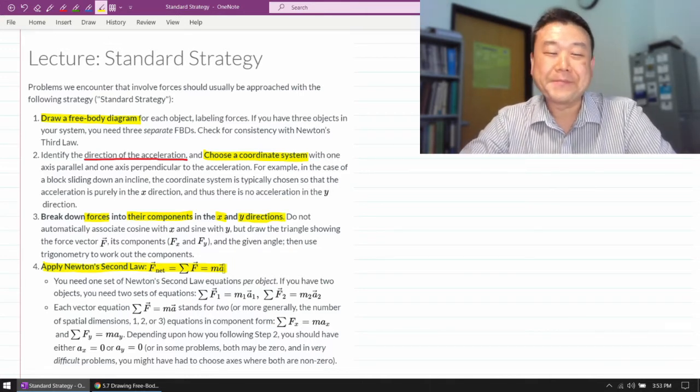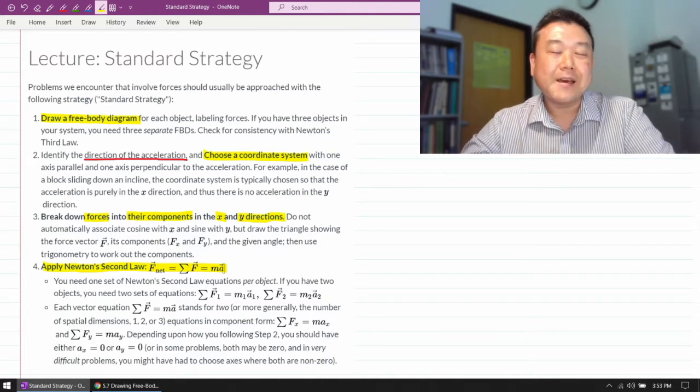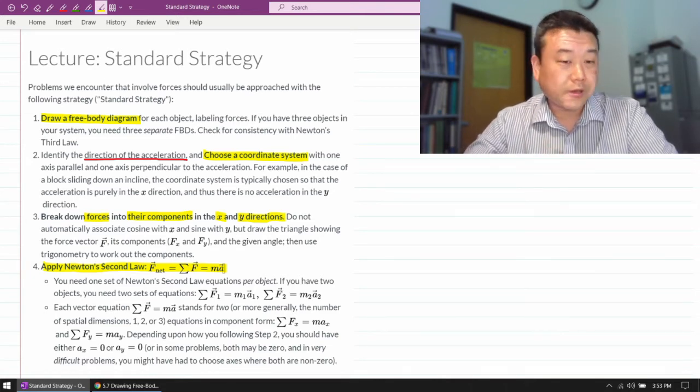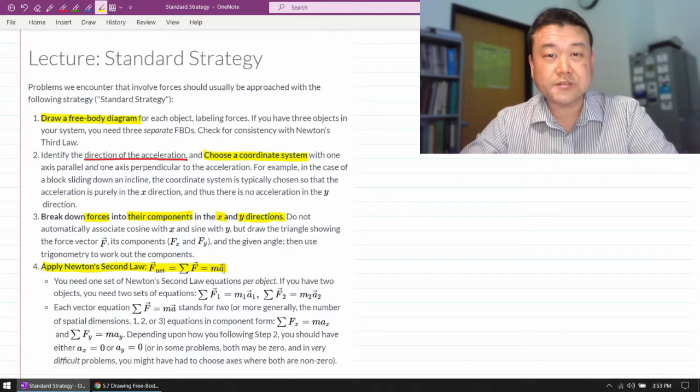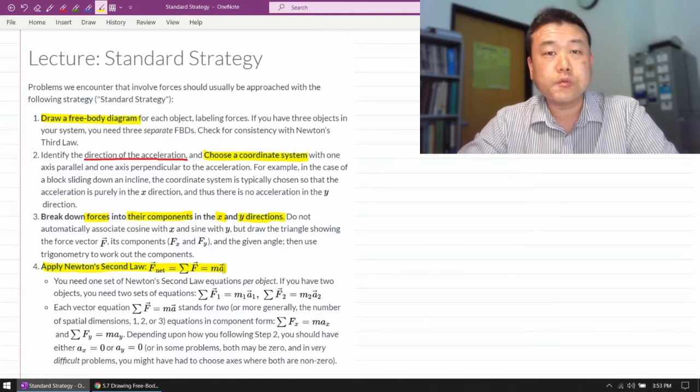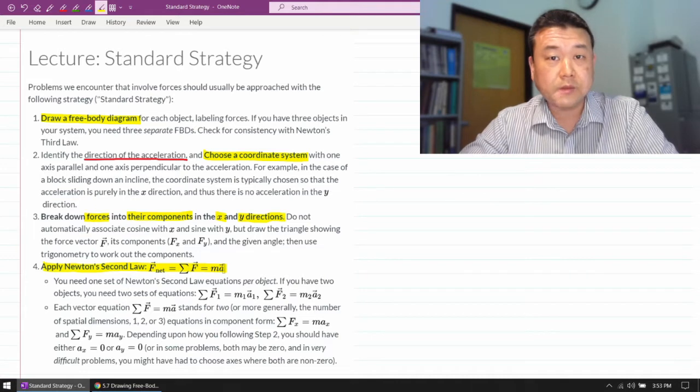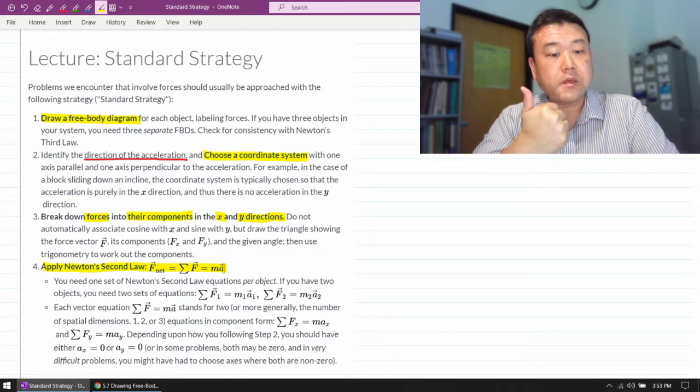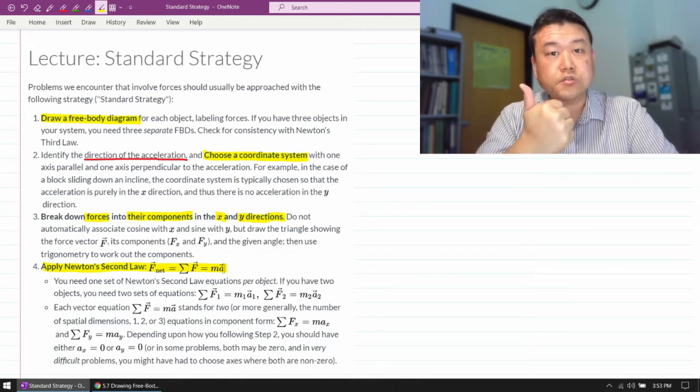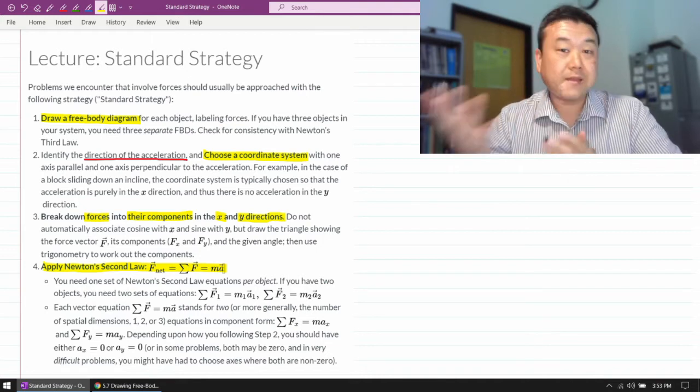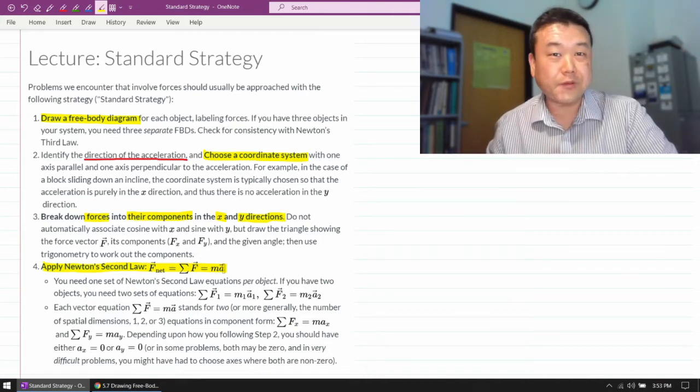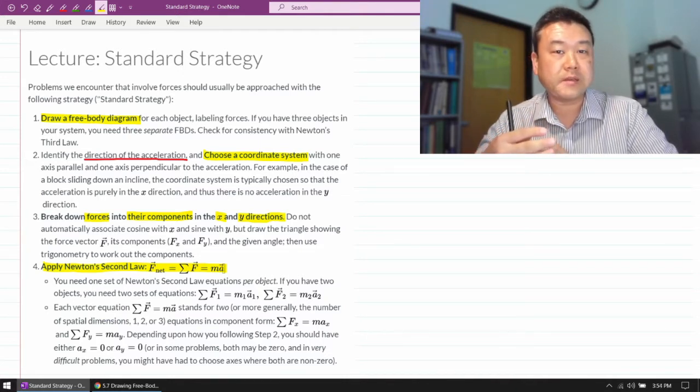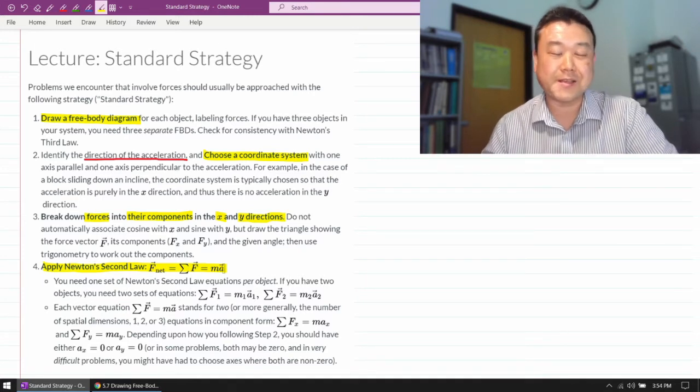And part of that is because, well, the rest is math. And perhaps less glibly, the rest of the steps depend on exactly what it is the problem is asking for. We call the standard strategy standard strategy because it's the set of steps that you would go through in order to solve any problem involving forces, regardless of what the question actually asks for. So this is the strategy to get to the system of equations. And then actually solving those system of equations depends on what the question is asking for. So from that point on, the exact steps will vary depending on what your question asks for.